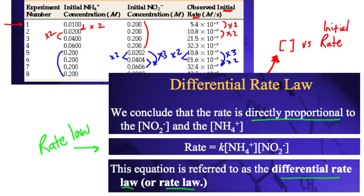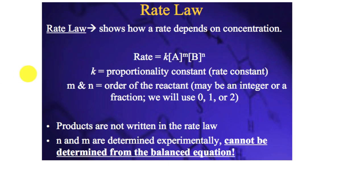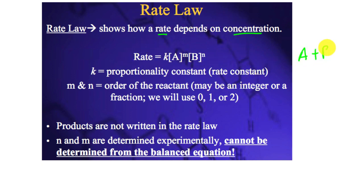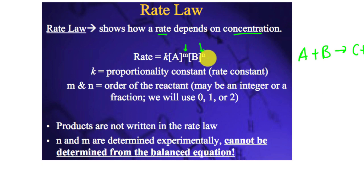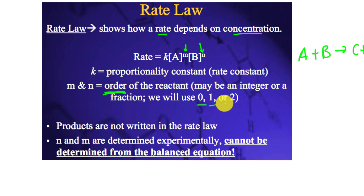The rate law shows how concentration affects the rate. For a generic reaction A plus B giving C plus D, we write rate equals k times [A]^m times [B]^n. We're looking for M and N — those are referred to as the order of reaction. The orders of reaction are going to follow 0, 1, or 2, known as zeroth order, first order, and second order.